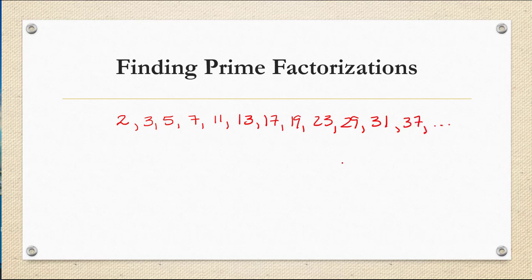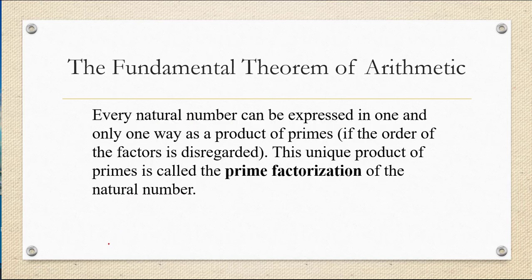I can't make a complete listing of all the prime numbers because there are an infinite number of prime numbers. But we will be using most of these smaller primes as we try to construct prime factorizations. The fundamental theorem of arithmetic says that every natural number can be expressed in one and only one way as a product of primes, if the order of the factors is disregarded. This unique product of primes is called the prime factorization of the natural number.